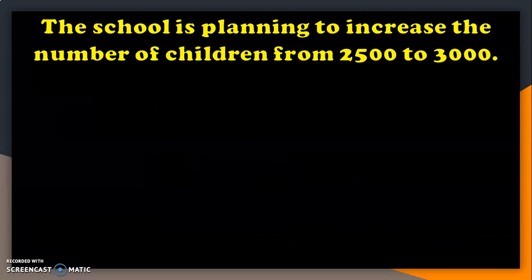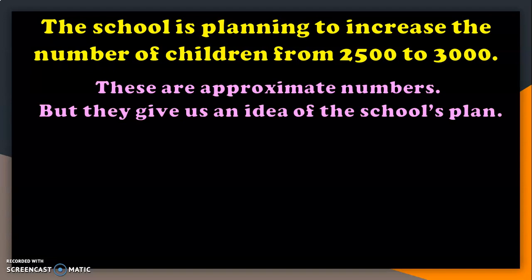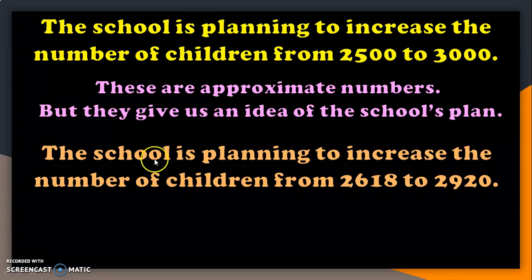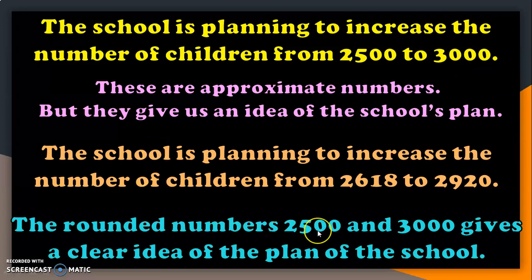The school is planning to increase the number of children from 2500 to 3000. These are approximate numbers, but they give us an idea of the school's plan. Suppose the school gives a statement like: the school is planning to increase the number of children from 2618 to 2920. This statement will cause confusion because we do not need so many details. The rounded numbers 2500 and 3000 give us a clear idea of the plan of the school.